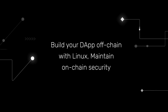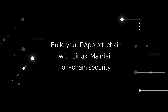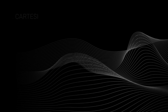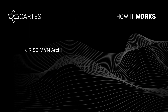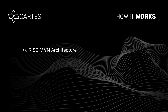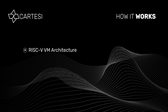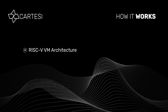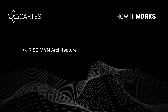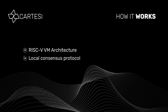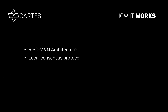Descartes provides dApps with massive computational scaling and the generality of Linux, while keeping the strong security guarantees of the underlying blockchain. This is the result of two principles: a deterministic and self-contained implementation of a RISC-V instruction set architecture, and an optimistic protocol for local consensus, where dApp participants are incentivized to engage with the system honestly.